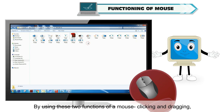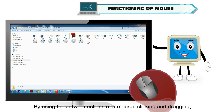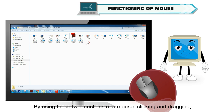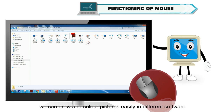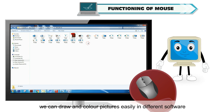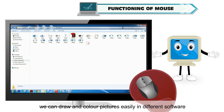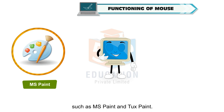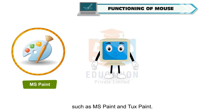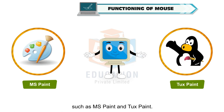By using these two functions of a mouse — clicking and dragging — we can draw and color pictures easily in different software such as MS Paint and Tux Paint.